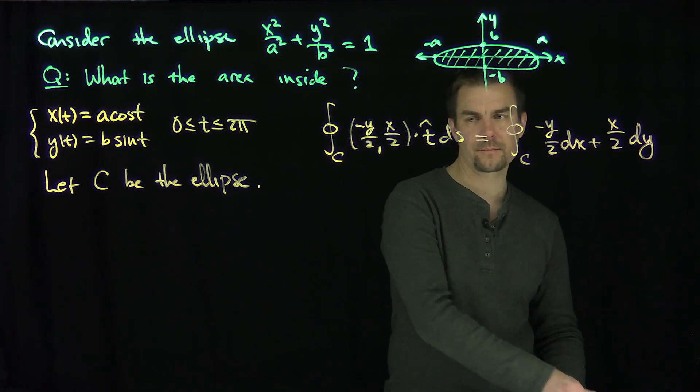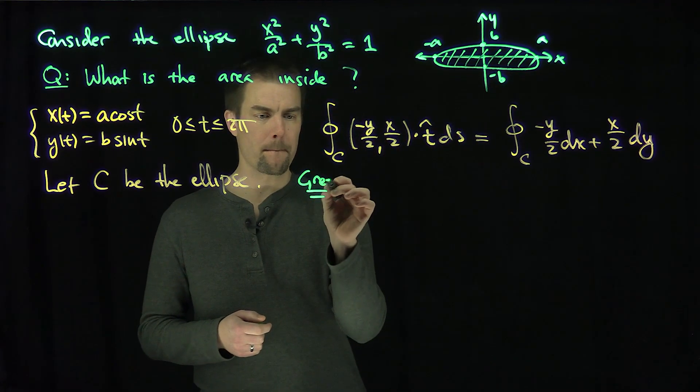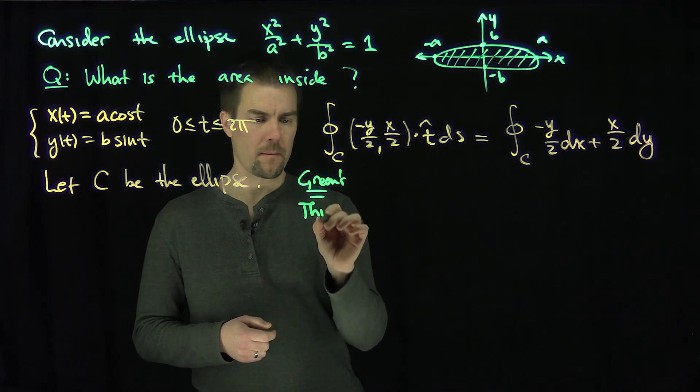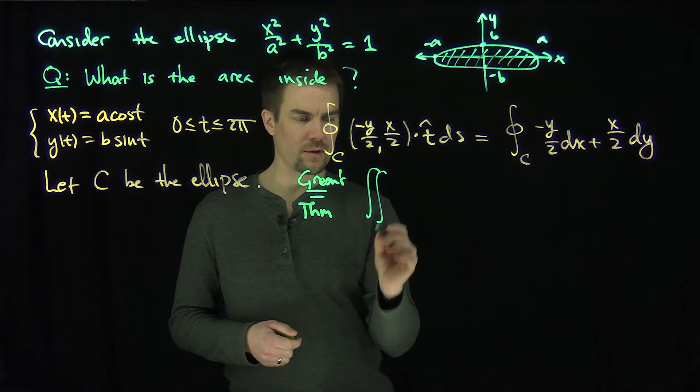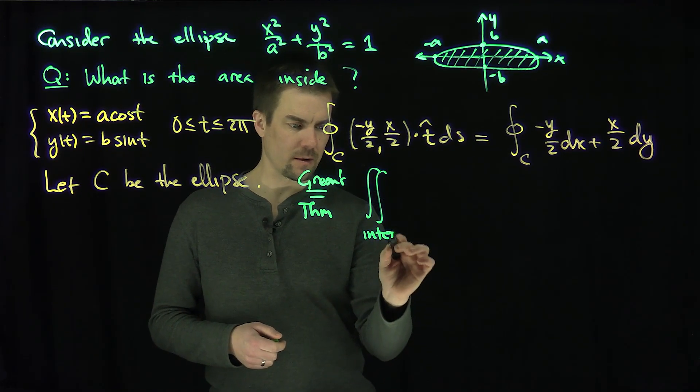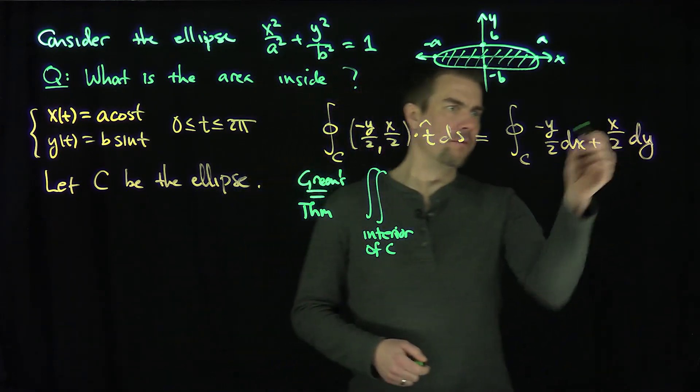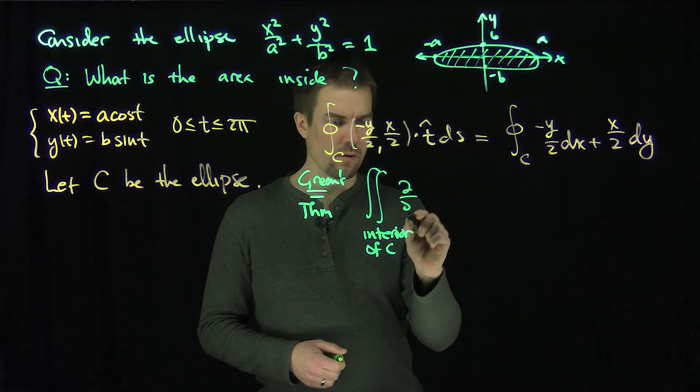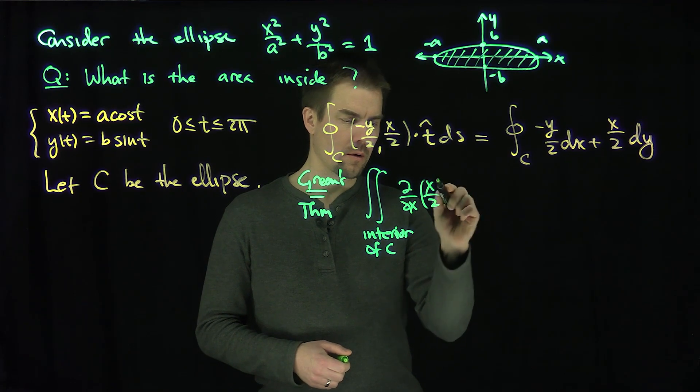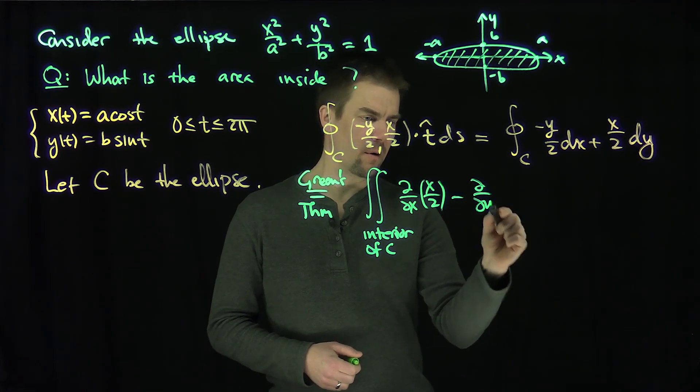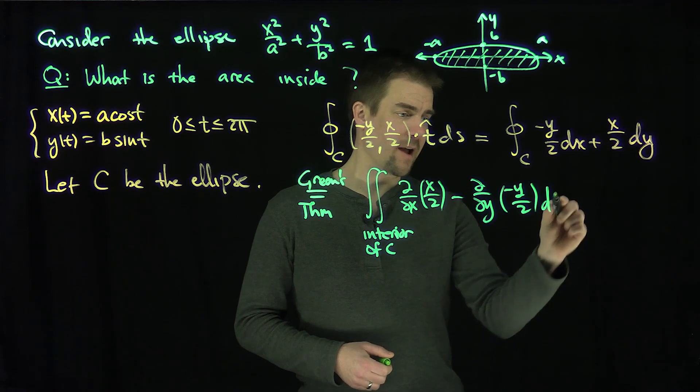So by Green's theorem, this is equal to the double integral over the interior of this ellipse of the x derivative of x over 2 minus the y derivative of negative y over 2 dA.